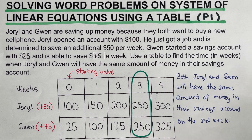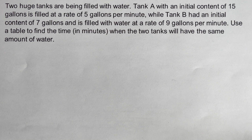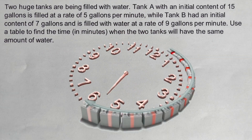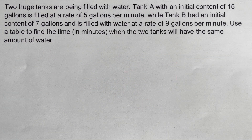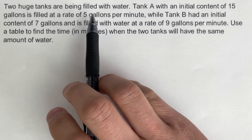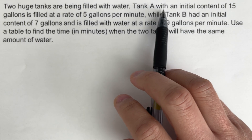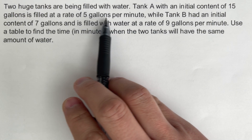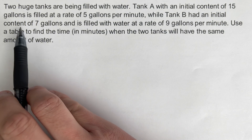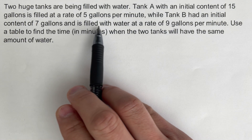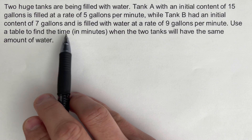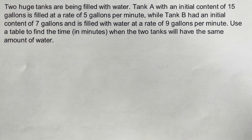Now let's move on to the next example. I'd encourage you to pause this video and try this problem on your own, and when you're done, check your answer. Two huge tanks are being filled with water. Tank A, with an initial content of 15 gallons, is filled at a rate of 5 gallons per minute. While Tank B had an initial content of 7 gallons and is filled with water at a rate of 9 gallons per minute. Use a table to find the time in minutes when the two tanks will have the same amount of water.